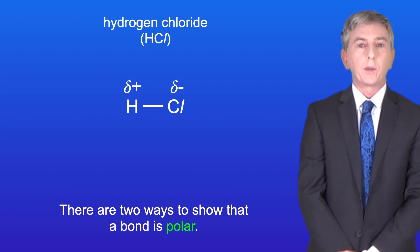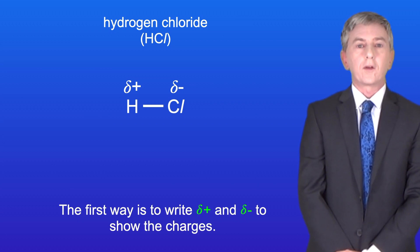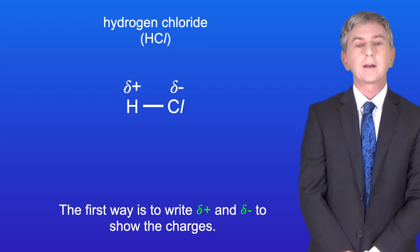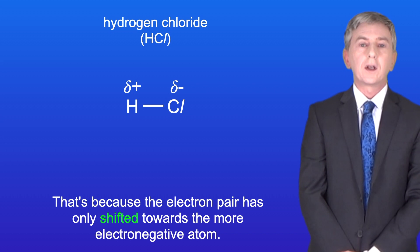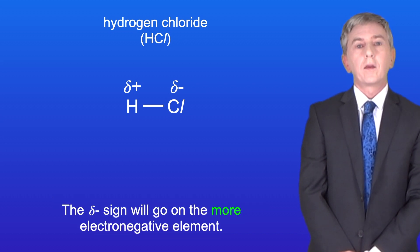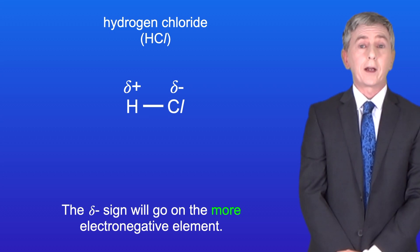Now there are two ways to show that a bond is polar. The first way is to write delta positive and delta negative to show the charges. Delta means that the charge is small, and that's because the electron pair has only shifted towards the more electronegative atom. The delta negative sign will go on the more electronegative element.